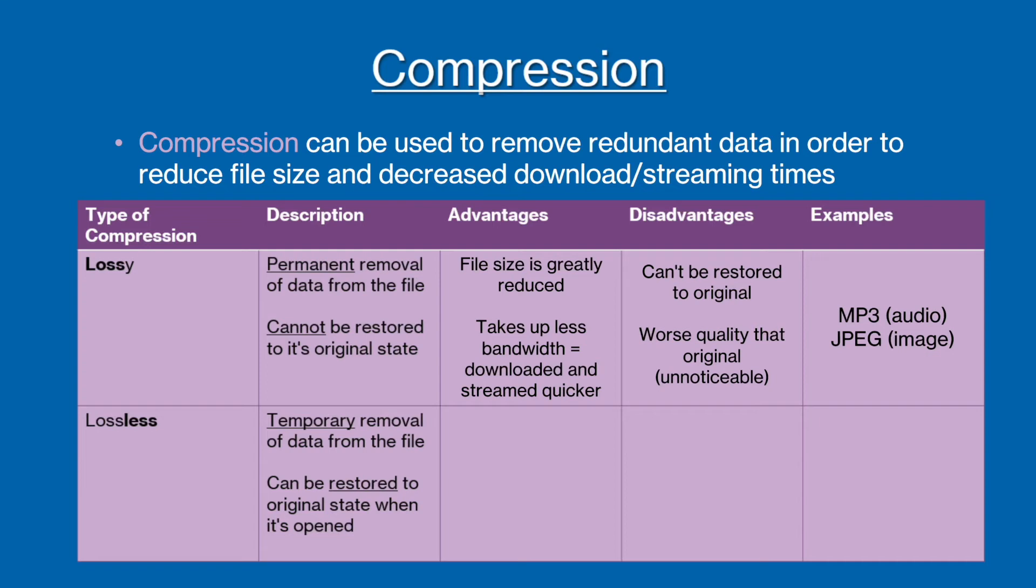The second type of compression is called lossless compression. This also removes data from the file. However, it is only temporary. This means that the file can be restored to its original state, resulting in no reduction in quality. The file size of the file is still reduced in lossless compression. However, it is less of a reduction than compared to lossy compression. Examples of file formats compressed with lossless compression include png images and gif animations.